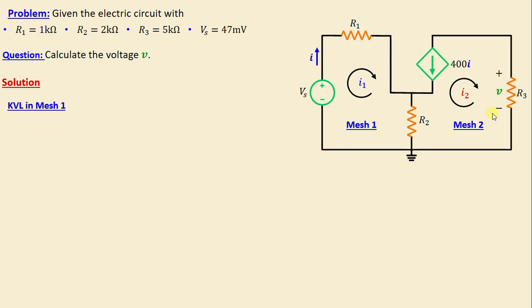Let's start by applying Kirchhoff's voltage law in mesh one. We can write: -Vs + R1·i1 + R2(i1 - i2) = 0. By replacing the resistors and the voltage with their numerical values, we obtain: -47 + i1 + 2(i1 - i2) = 0.